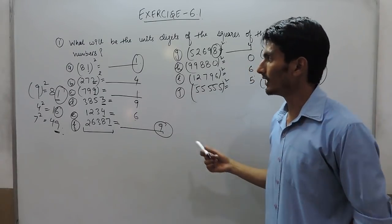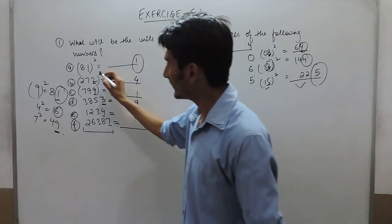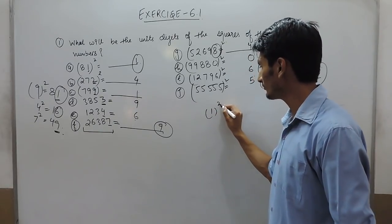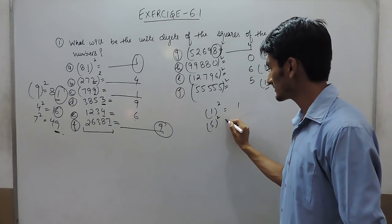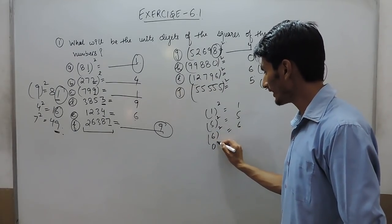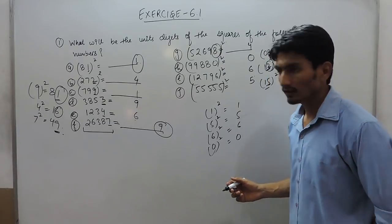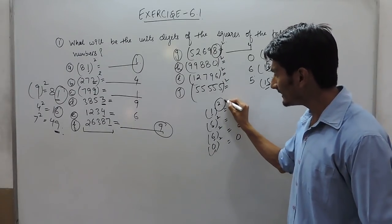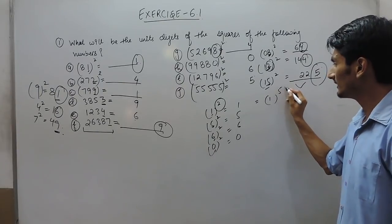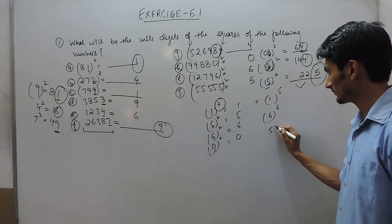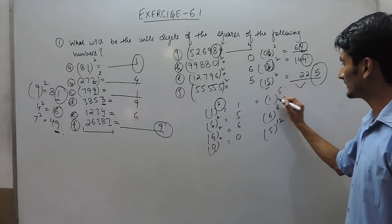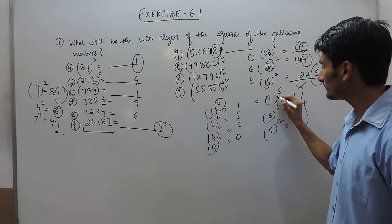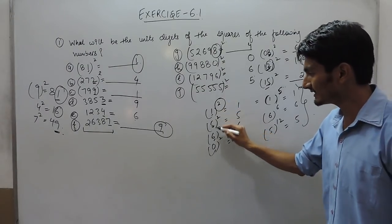Another important finding: when 1 is squared it always gives 1. The square of 1 is 1, square of 5 is 5, square of 6 is 6, square of 0 is 0. When these digits are raised to any power, their unit digit will always remain the same, irrespective of what power you are finding for these digits.